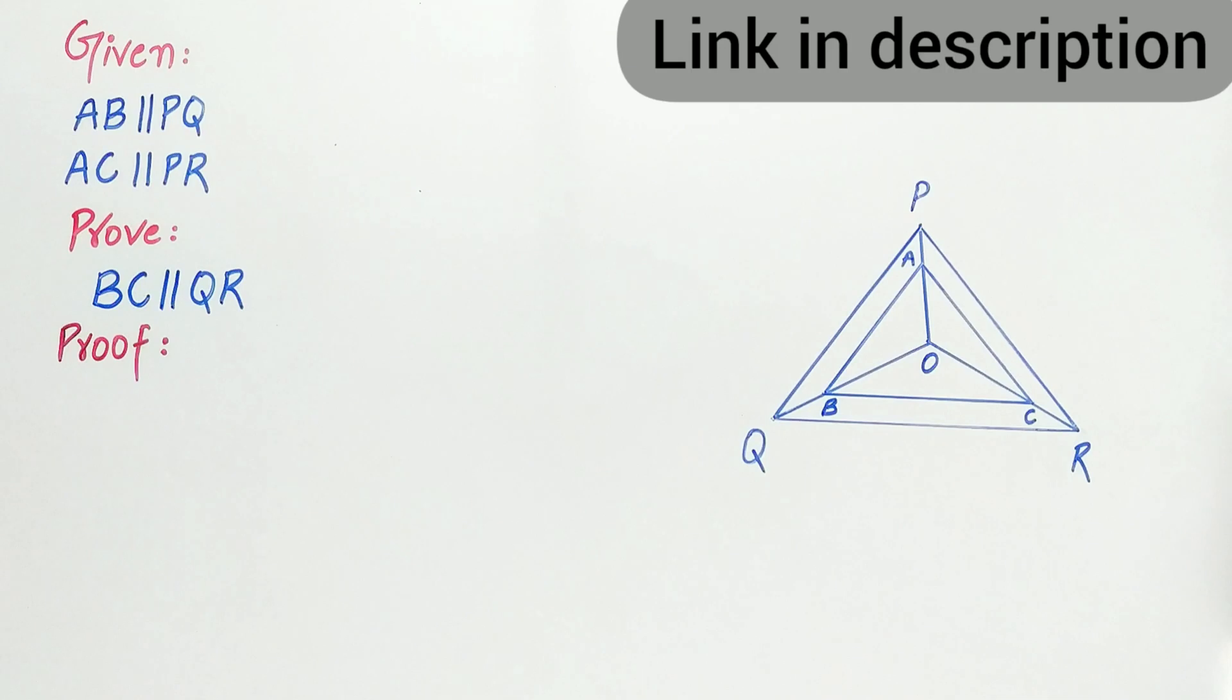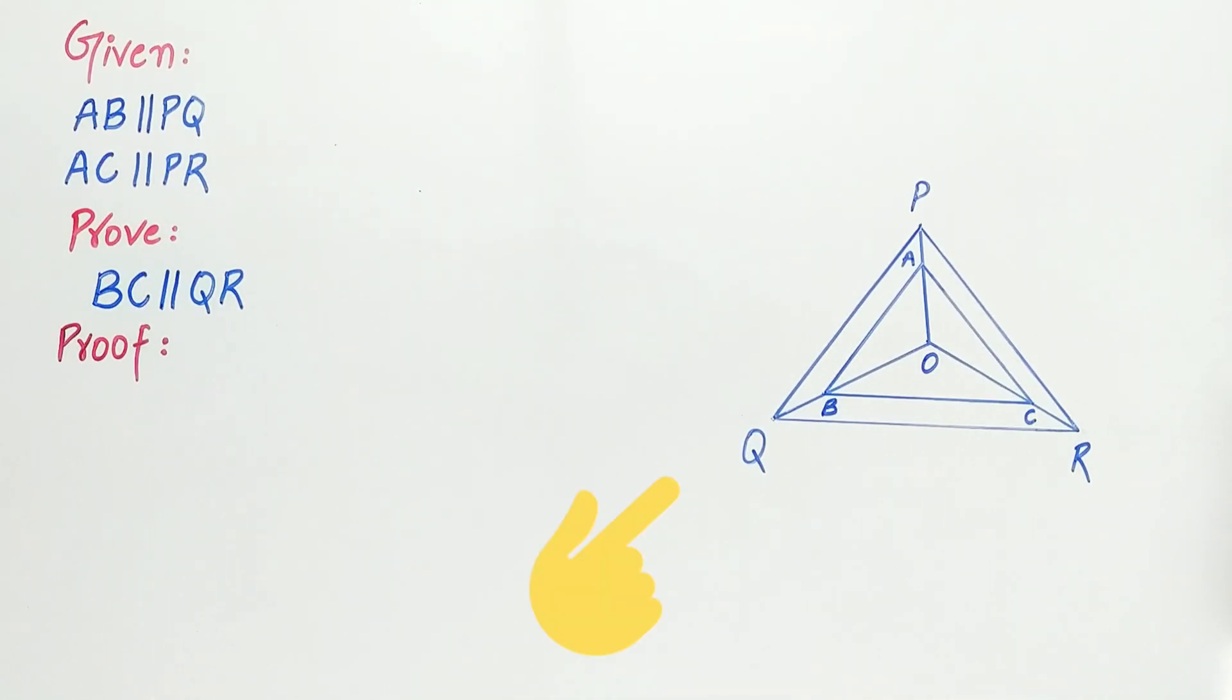If you have watched the previous video, then you can easily solve this question. Now look carefully. Triangle POQ has AB parallel to PQ.